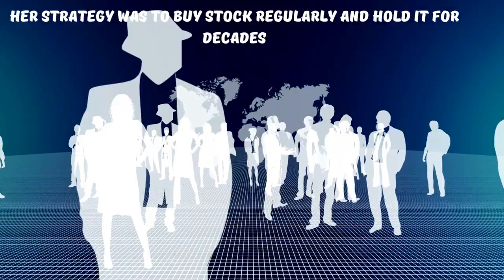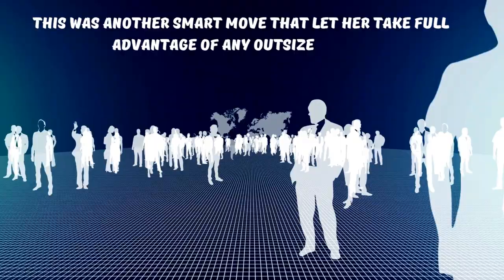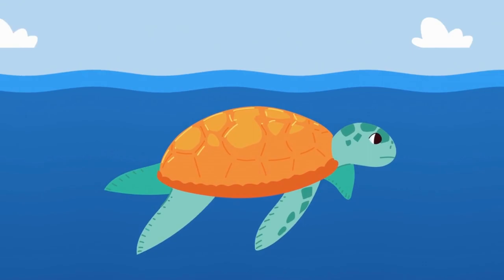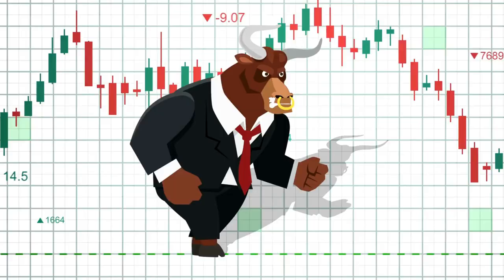She never sold because she hated paying commissions. This was another smart move that let her take full advantage of any outsized gains. Letting winners run for decades is what separates the best investors in the world from those who have mediocre investment careers. Very few people have the patience to hold on to stocks for months, let alone decades. But this patience is a trait that separates winners from losers because it gives companies time to compound profits, dividends, and intrinsic values.